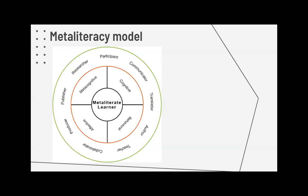Mackey and Jacobsen put together a visual model of the meta-literate learner at the center. There are cognitive elements — things we'd probably already have identified with the skills we want people to learn — and behaviors, but also a new one: the idea that there is an affective dimension, an emotional, motivational, dispositional element to meta literacy that we have to take into account. Around the outside there are all the different roles a meta-literate learner might have: participant, communicator, translator, author, teacher, collaborator, producer, publisher, researcher.